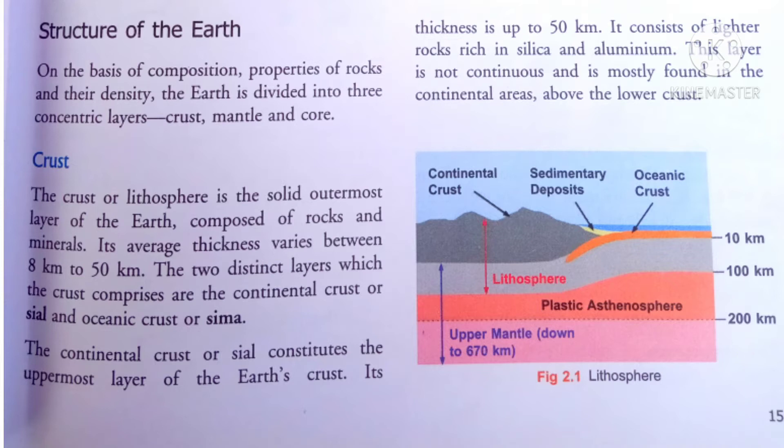The continental crust forms the uppermost layer of the Earth's crust. Its thickness is up to 50 km. It consists of lighter rocks rich in silica and aluminium.